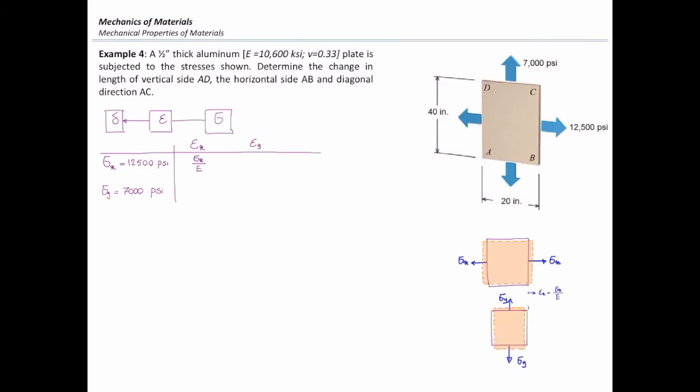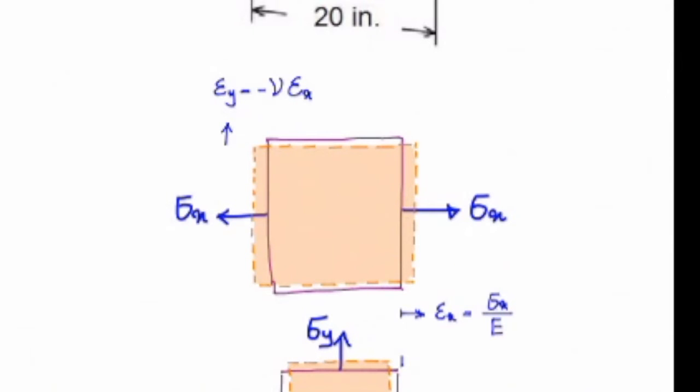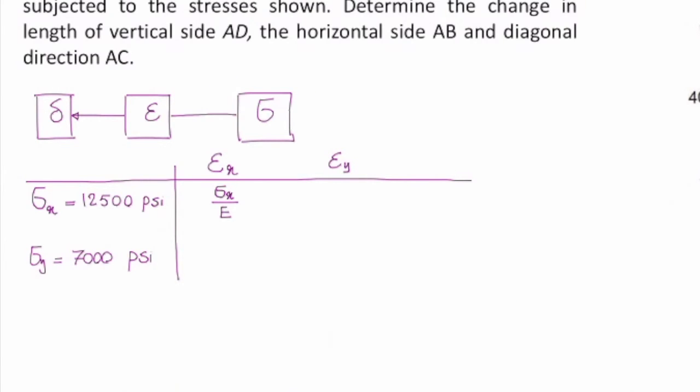Now, can you tell me how much would be the strain caused in that direction? Epsilon Y would be negative ν times Epsilon X. How much is Epsilon X? It is Sigma X over E. So how much would be the strain in that direction? That would be negative ν times Sigma X over E. So the strain in that direction would be negative ν Sigma X over E.